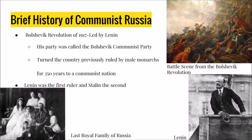Here's a brief history of communism in Russia. The Bolshevik Revolution of 1917 was led by Lenin. His party was called the Bolshevik Communist Party. During this revolution, Russia, a country that was previously ruled by male monarchs for 350 years, became a communist nation. The goal of communism in Russia was to live in a classless society with equality among the rich, which were called the bourgeois, and the common man, which was called the proletariat.